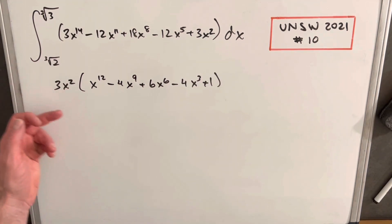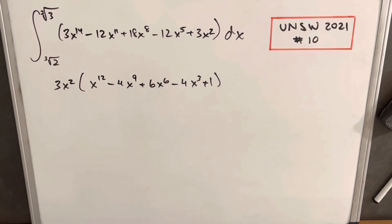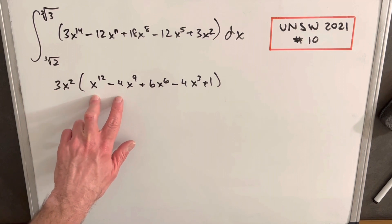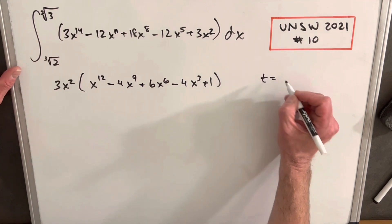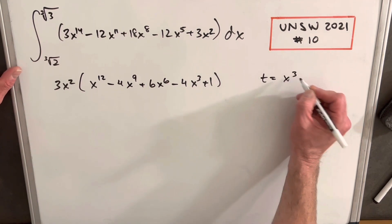This cleans it up a little bit, makes the coefficients look a little nicer. And then from here what we notice is the power on all of our x terms are divisible by 3. So what I can do here, we can just do a little substitution. If I say t equals x cubed, then I can rewrite this again.